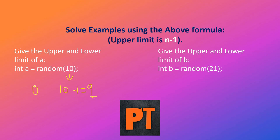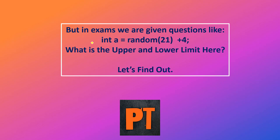Give the upper and lower limit of b: int b = random(21). So 21 minus 1 equals 20. Upper limit is 20, lower limit is, as usual, always 0.